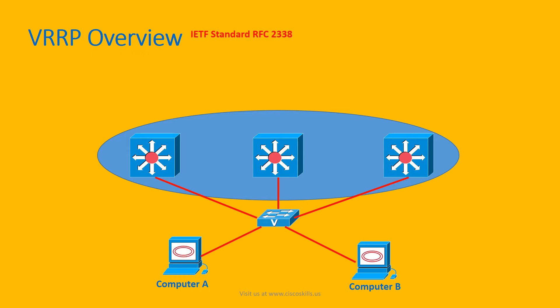VRRP Overview. VRRP is a standard-based protocol alternative to HSRP and is defined in IETF standard RFC 2338. Just like HSRP, VRRP allows us to configure two or more layer 3 switches or routers to form a group that appears to clients' computers as a single default gateway with one virtual IP address and one virtual MAC address.